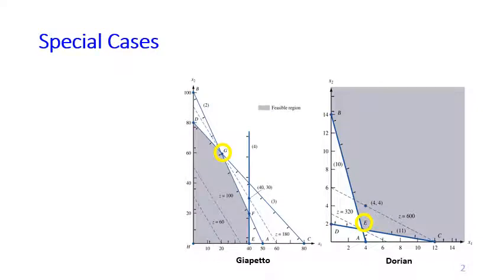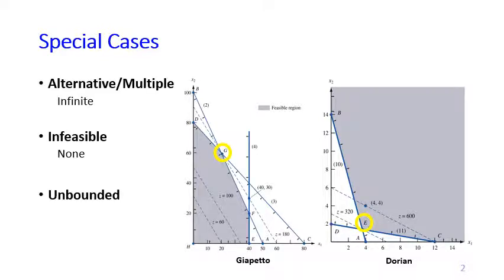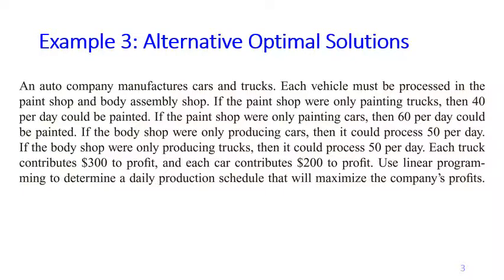Recall that in the Giapetto and Dorian Auto problems we had only one single optimal point. However, there are other possibilities. For example, when we have alternative or multiple solutions, we have an infinite number of solutions. Another special case is having no optimal solution at all — the infeasible case. And then there is the unbounded problem. This is an example of an LP with alternative optimal solutions.